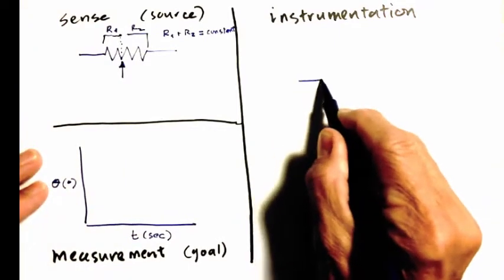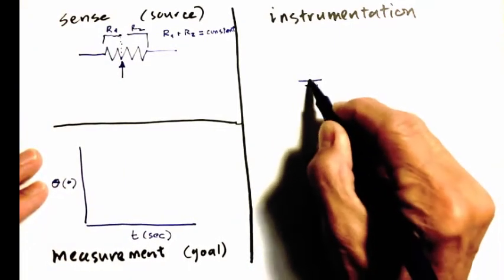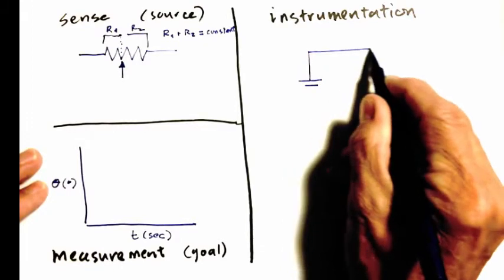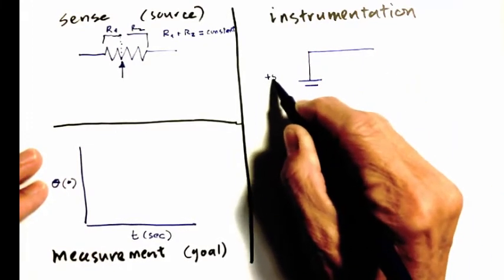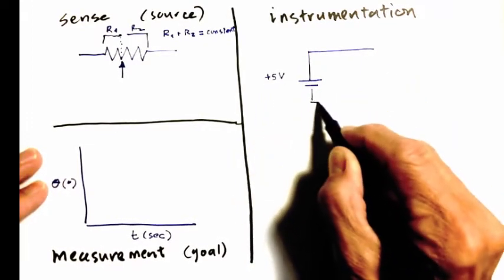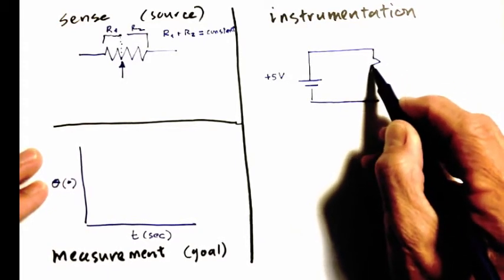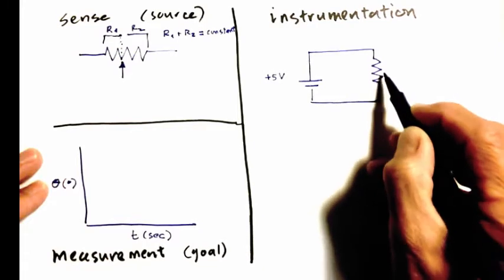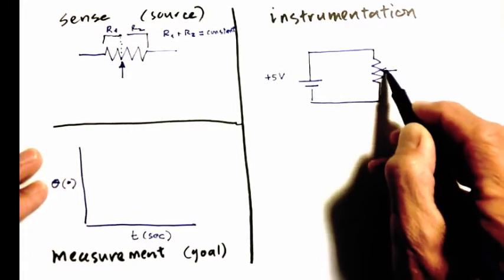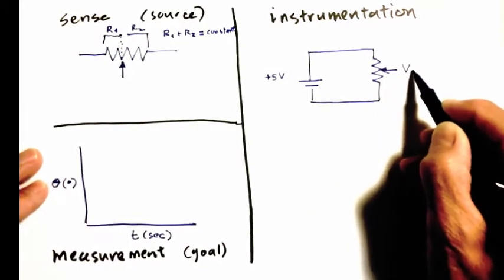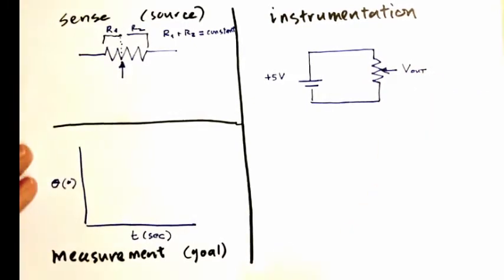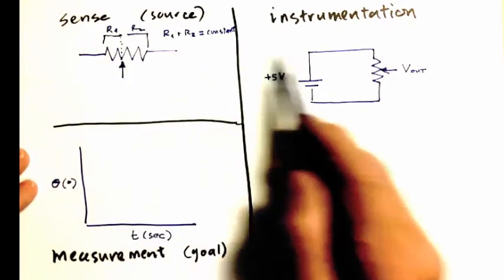So what does the instrumentation look like? Well, we're going to use a very simple circuit. It's going to be a DC voltage supply, and we're going to take that from the oscilloscope and supply it to the potentiometer. And the potentiometer, functioning as a voltage divider, will essentially be our sensor to sense the angle of the pendulum.